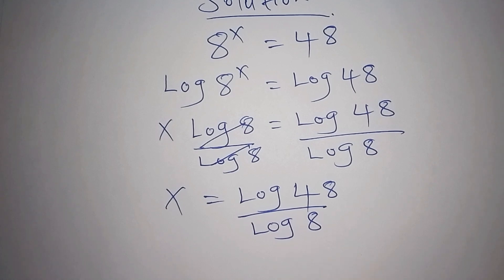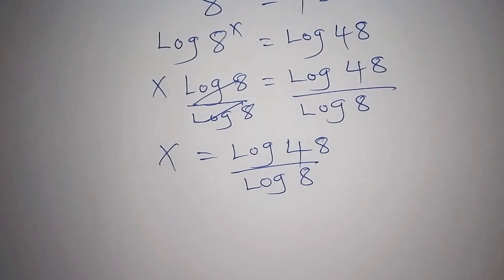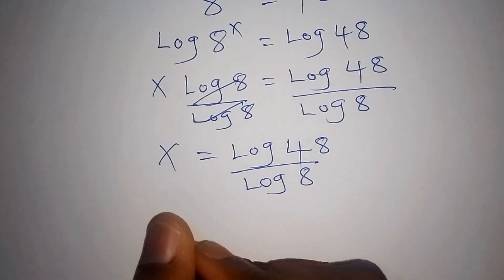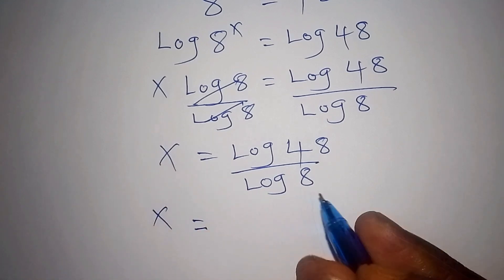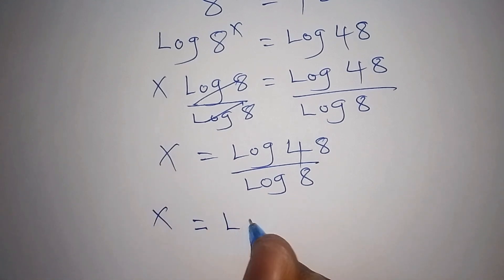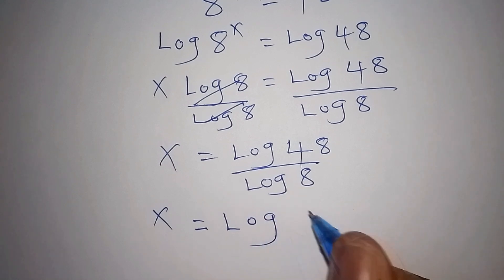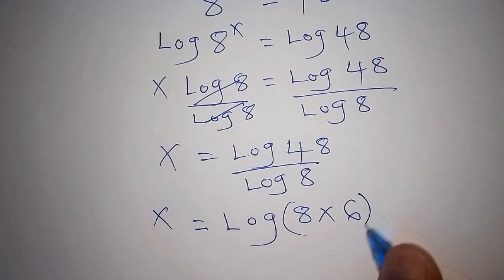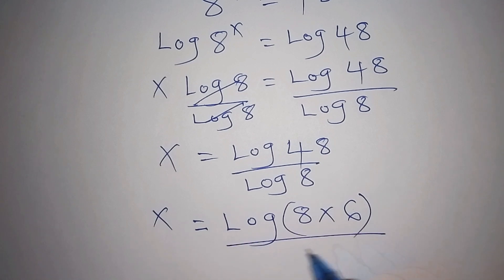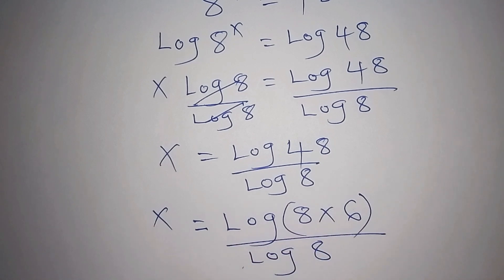Now we can express the log of 48. When you express the log of 48, x is equal to the log of 8 multiplied by 6, all in brackets, all over the log of 8.